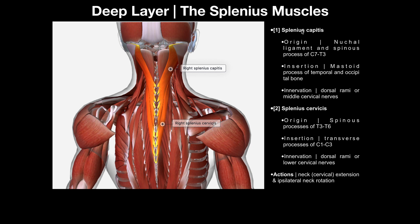When we're looking at these two muscles, they both have similar innervations. It's going to be dorsal rami at that particular level, but also middle cervical nerves for the splenius capitis and lower cervical nerves for the splenius cervicus, which makes sense — it would be lower for the cervicus because it's the inferior muscle, whereas the splenius capitis is above that, so it would be the middle cervical nerves along with the dorsal rami.